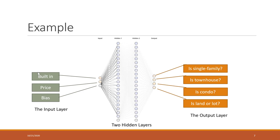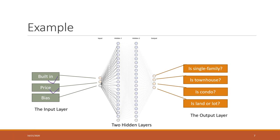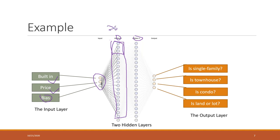In the input layer we will have three units: the input price, and as we always have a bias node, we have those three units in the input layer. You can define how many hidden layers you want and how many units you want in each hidden layer. Here we have 20 units in the first hidden layer plus bias, and also 20 units in the second hidden layer plus bias.